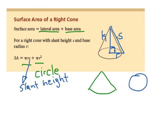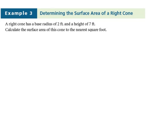This means if we have the height, the slanted area, we can find radius and vice versa. Let's use this formula in an example. A right cone has a base radius of 2 feet and a height of 7 feet. Calculate the surface area of this cone to the nearest square foot.